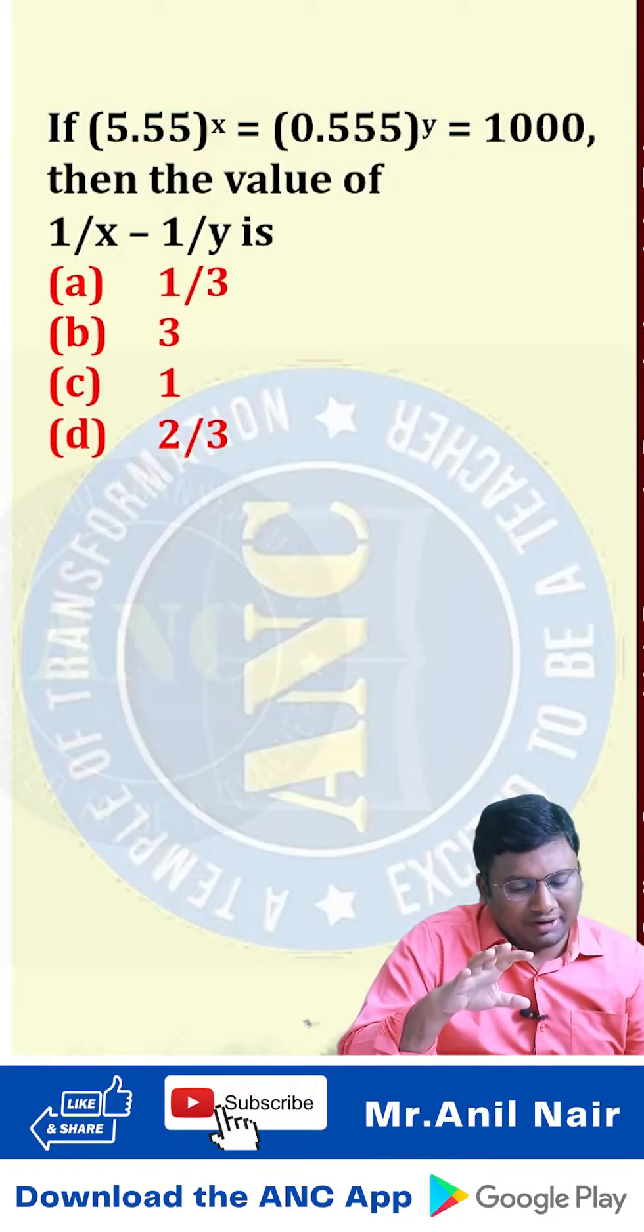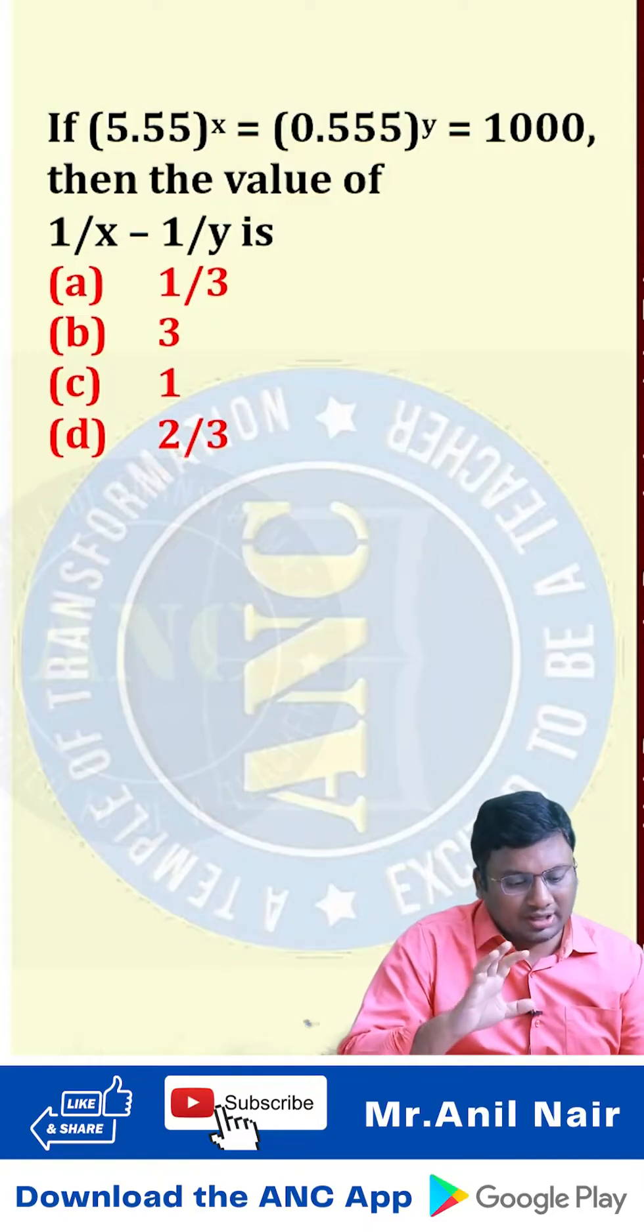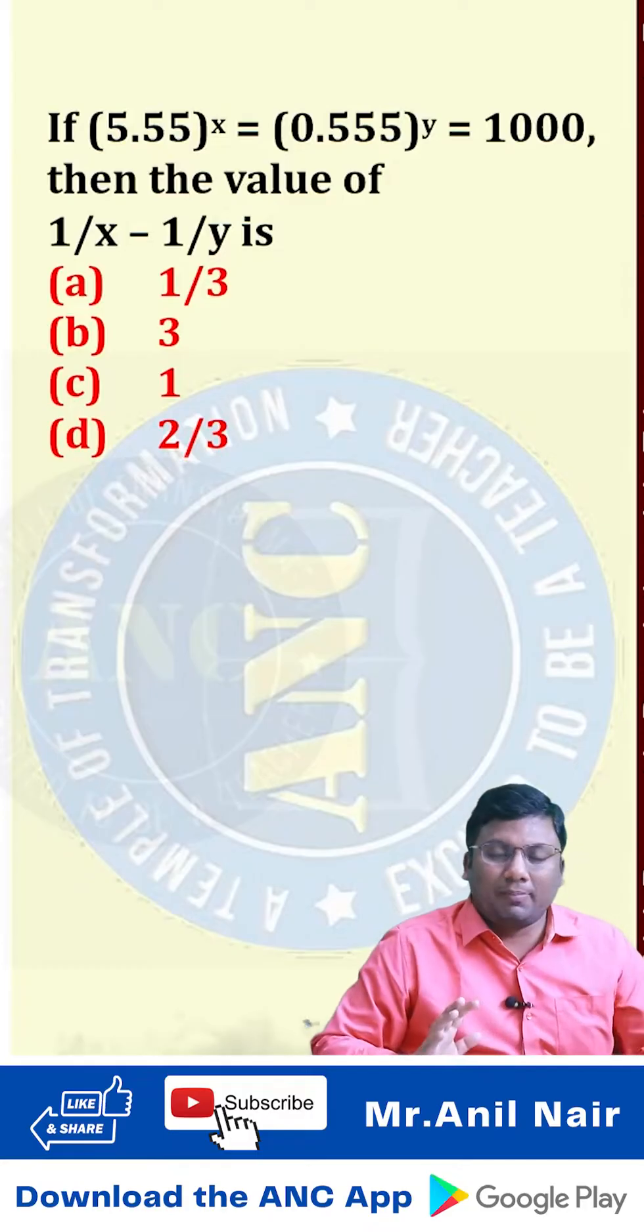5.55 power x equivalent to 0.555 power y equivalent to 1000. Find the value of 1 by x minus 1 by y.